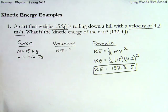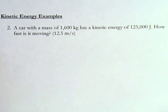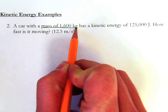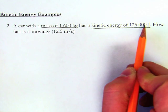Next, let's take a look at one that's slightly different. Here's example number two. A car with a mass of 1,600 kilograms, so the mass is 1,600 kilograms, has a kinetic energy of 125,000 joules. How fast is it moving?